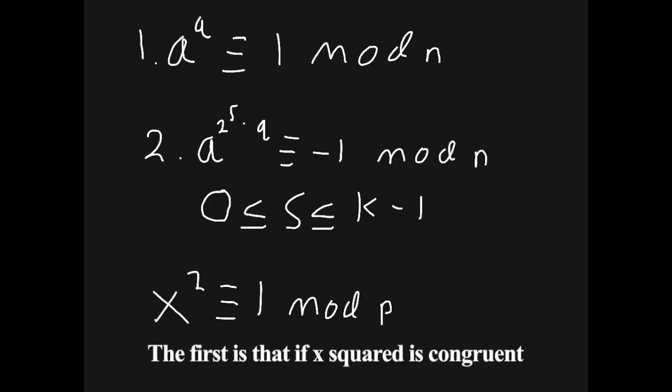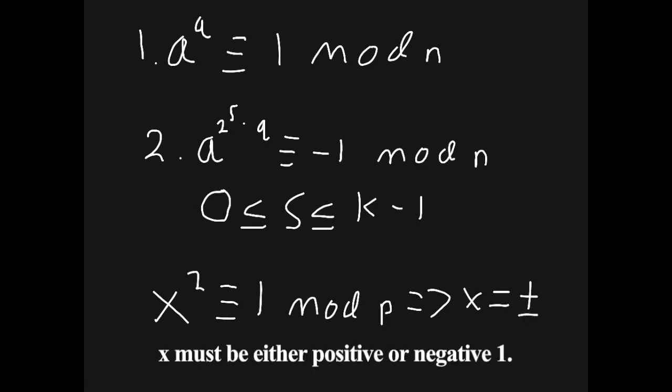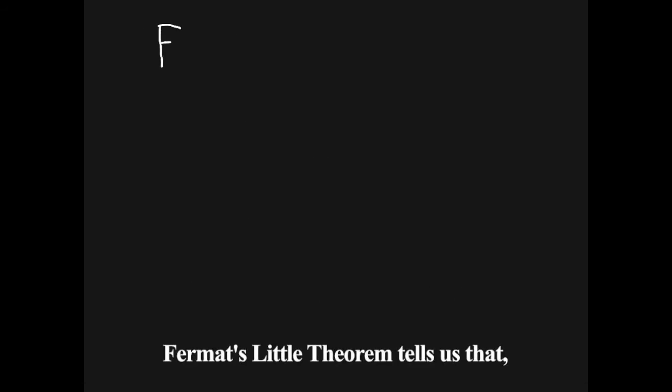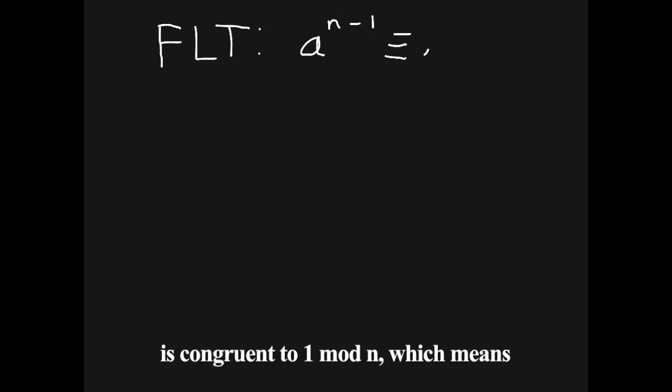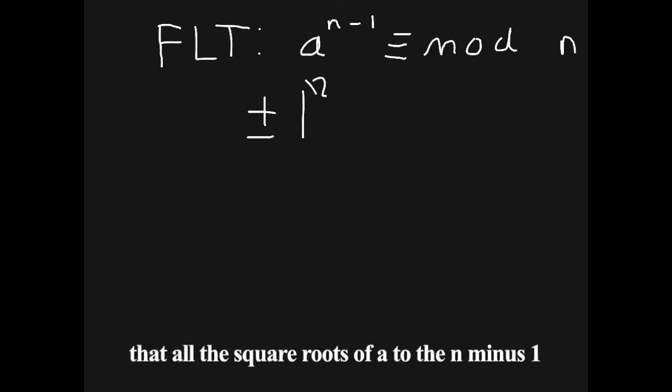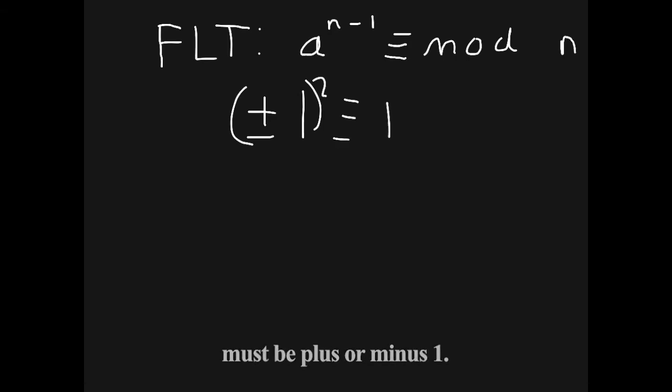The first is that if x squared is congruent to 1 mod p, where p is prime, x must be either positive or negative 1. Fermat's little theorem tells us that if n is prime, a to the n minus 1 is congruent to 1 mod n, which means that all the square roots of a to the n minus 1 must be plus or minus 1. This is the reason that we factor n minus 1 into an odd integer and 2's. The two tests come from this idea.